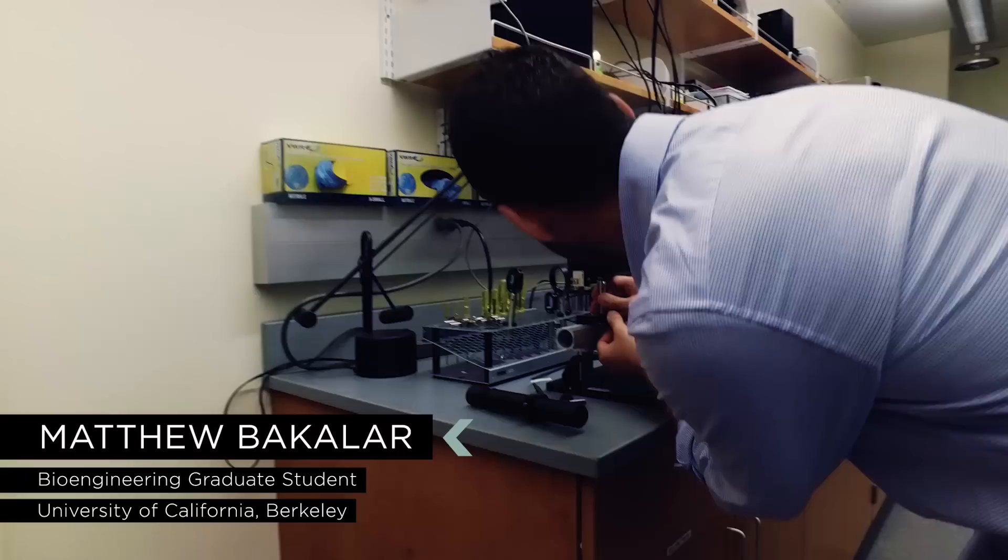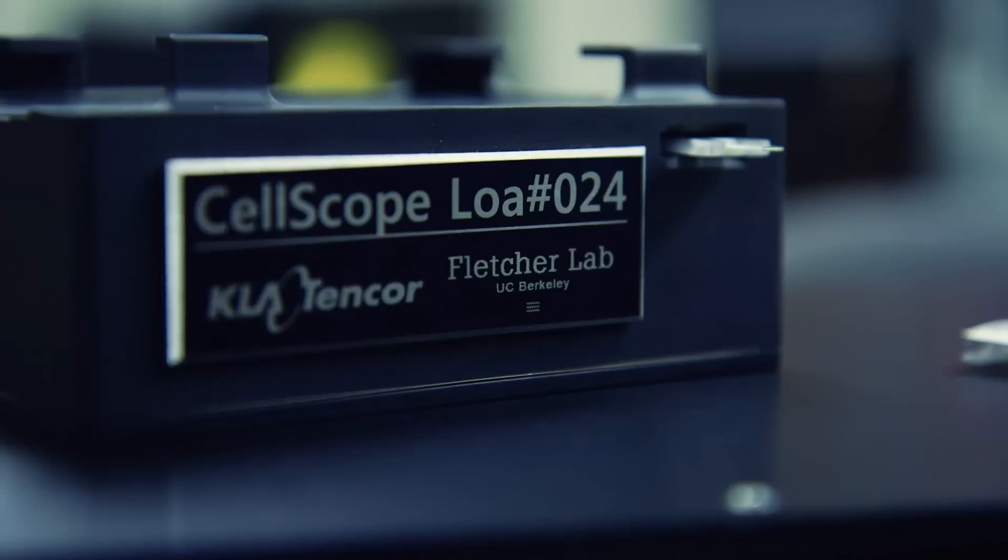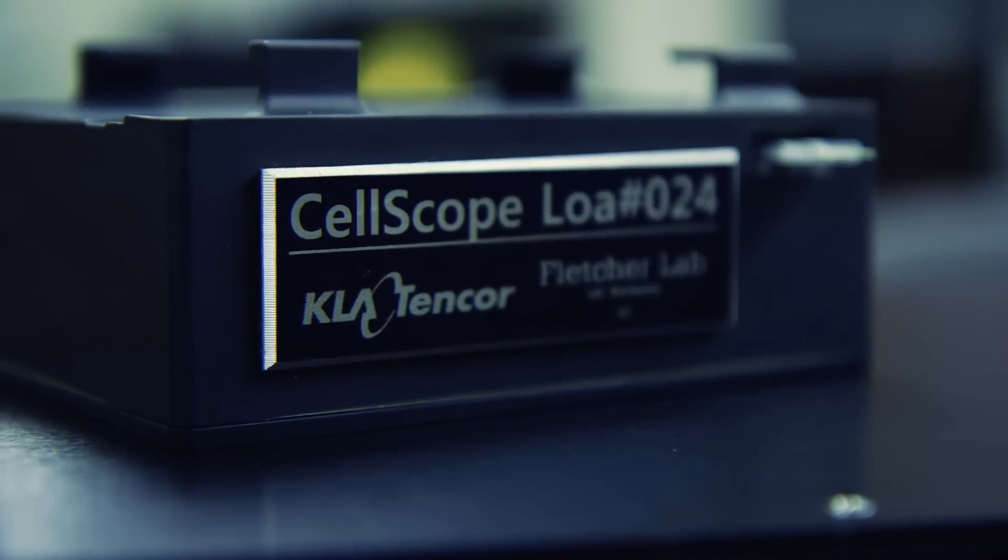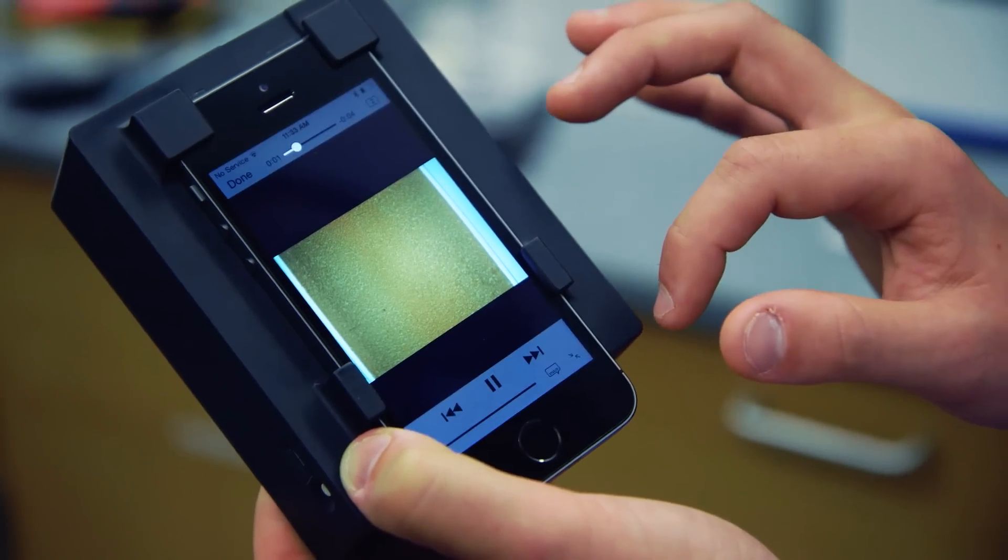But that could all change thanks to a modified piece of tech that we already know and love. We build microscopes that are based around a cell phone. That's Matt Bacalar, a bioengineering Ph.D. student at the University of California, Berkeley. He's part of a project team that's been working on the CellScope Loa, an optical device that converts a cell phone's camera into an inexpensive handheld microscope.